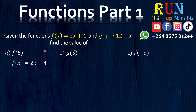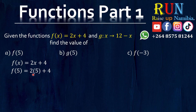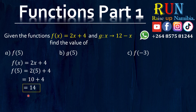Now when we use this function, wherever we see an X, we substitute the 5. Now when we substitute the 5, we basically just solve. You say 2 times 5 will give you what? It will give you 10. And then the positive 4 just comes down. Now what is 10 plus 4? That will be 14, 15. And just like that, we are done with A.